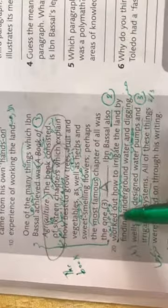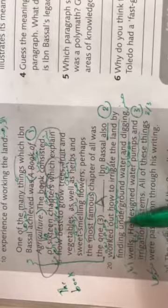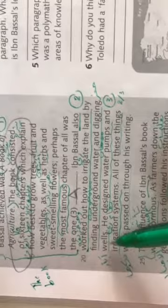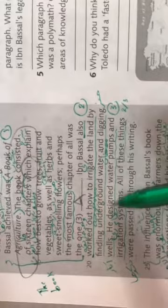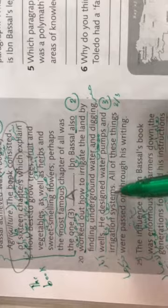Ibn Basal also worked out how to irrigate the land by finding underground water and digging wells. He designed water pumps and irrigation systems. All of these things were passed on through his writing.